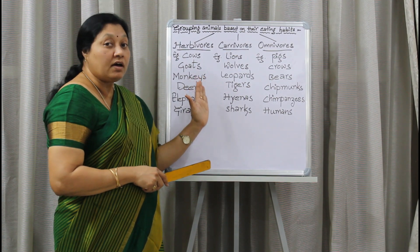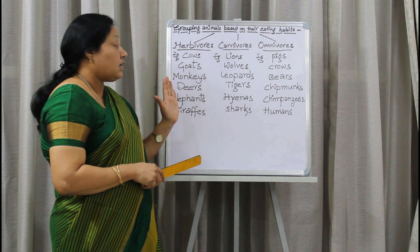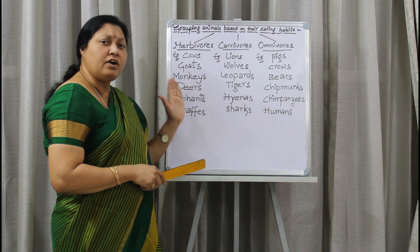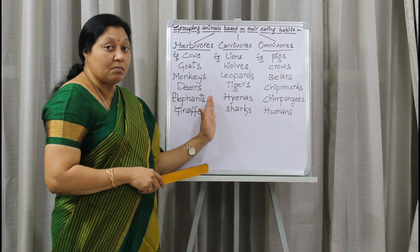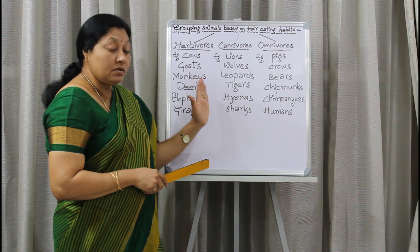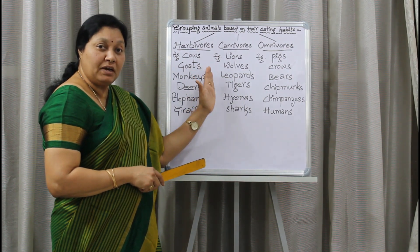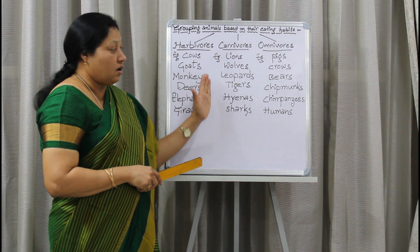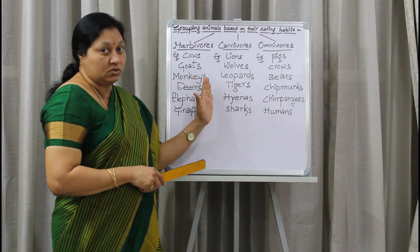They depend on other animals in order to get their food. Herbivores eat plants and only plants, whereas carnivores eat only the flesh of other animals. 'Carni' means meat and 'voris' means to eat — all flesh-eating animals are called carnivores.